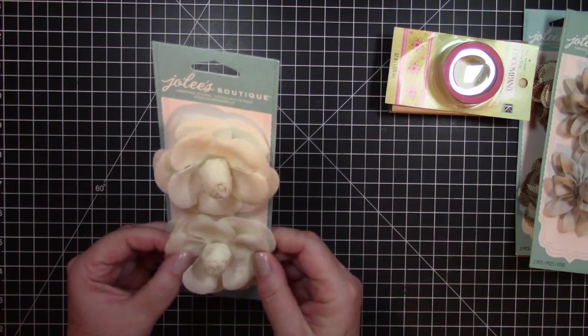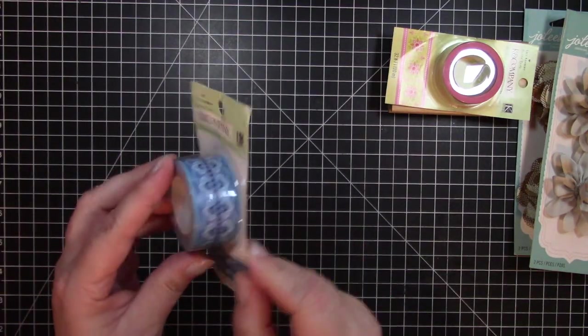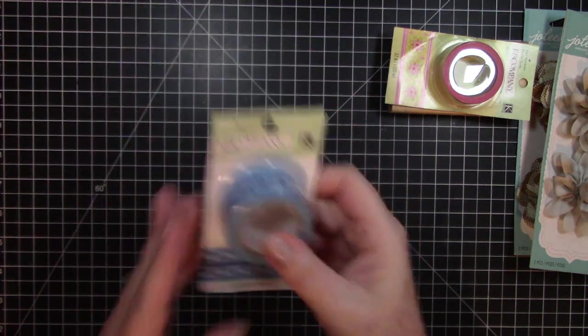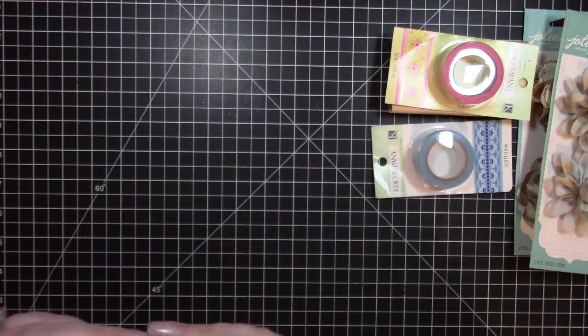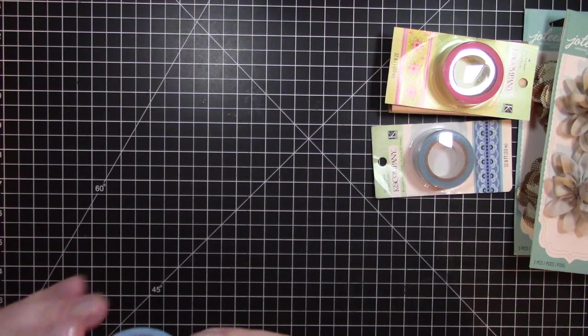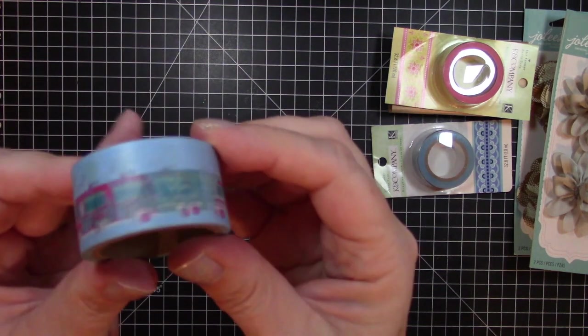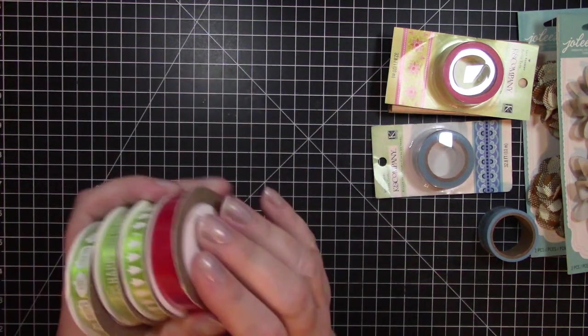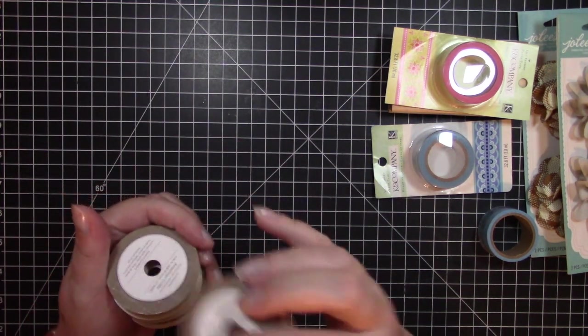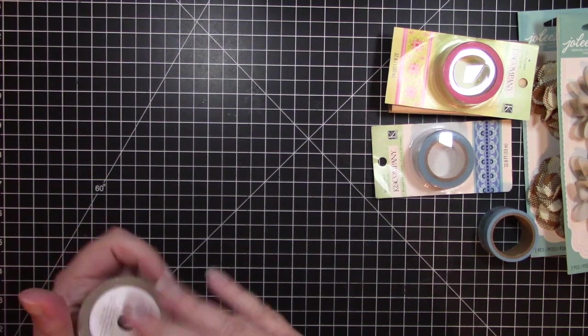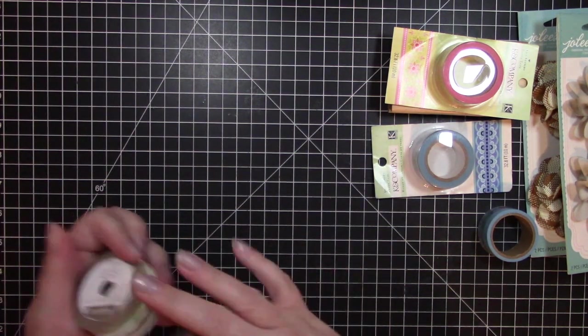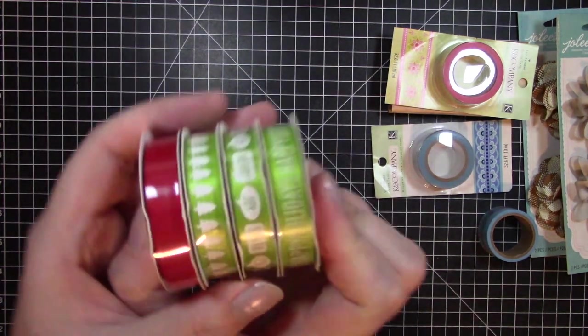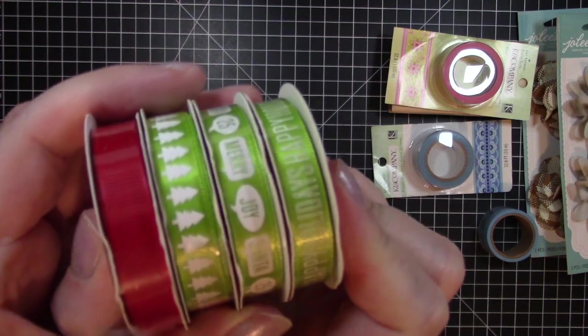Another set of Jolie's flowers. Some more Kay and Company washi tape. That's a pretty design. Some more washi tape here. It looks like an ambulance, maybe a school bus. Buses and trucks. We have some spools of ribbon which are perfect for my Christmas cards. These are from Studio Calico. And here are the four rolls. Great for Christmas cards.